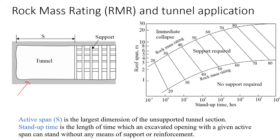We'll start with the schematic diagram where we have a tunnel — that's excavated rock mass — and we have some support here. There are two concepts that we use. The first is active span, which is S, and that will be the largest area of the tunnel that is not going to collapse when we excavate it without any support given.